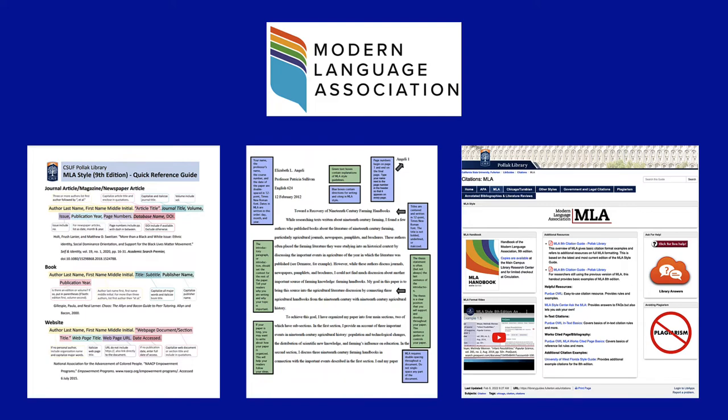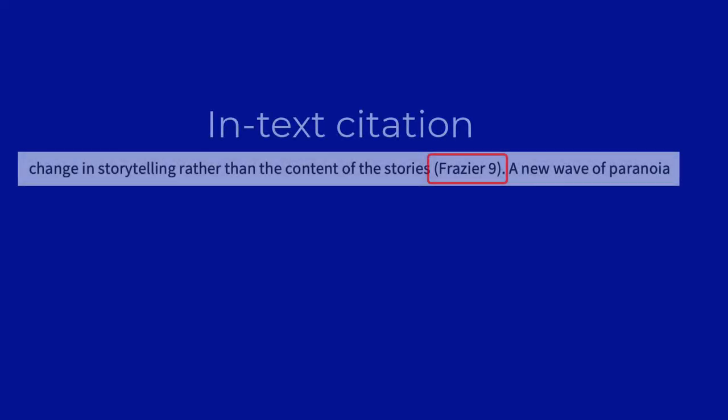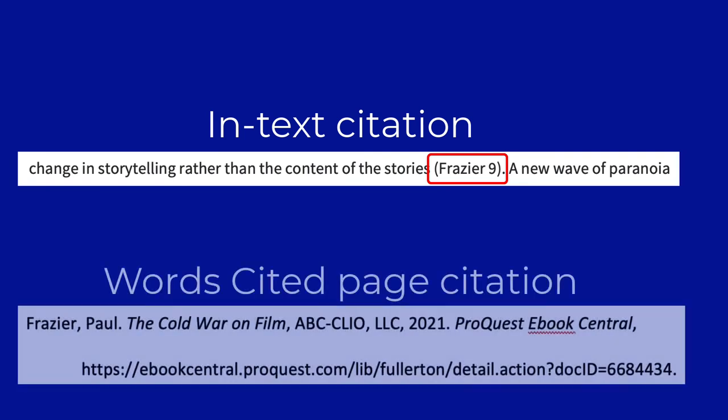We'll get to the works cited page in the next video, but first, let's take a look at in-text citations. In-text citations are located in the body of the paper. Each one corresponds with an item on the works cited list at the end of the paper. This allows for the reader to follow up on your citations, and if desired, locate that item for themselves.